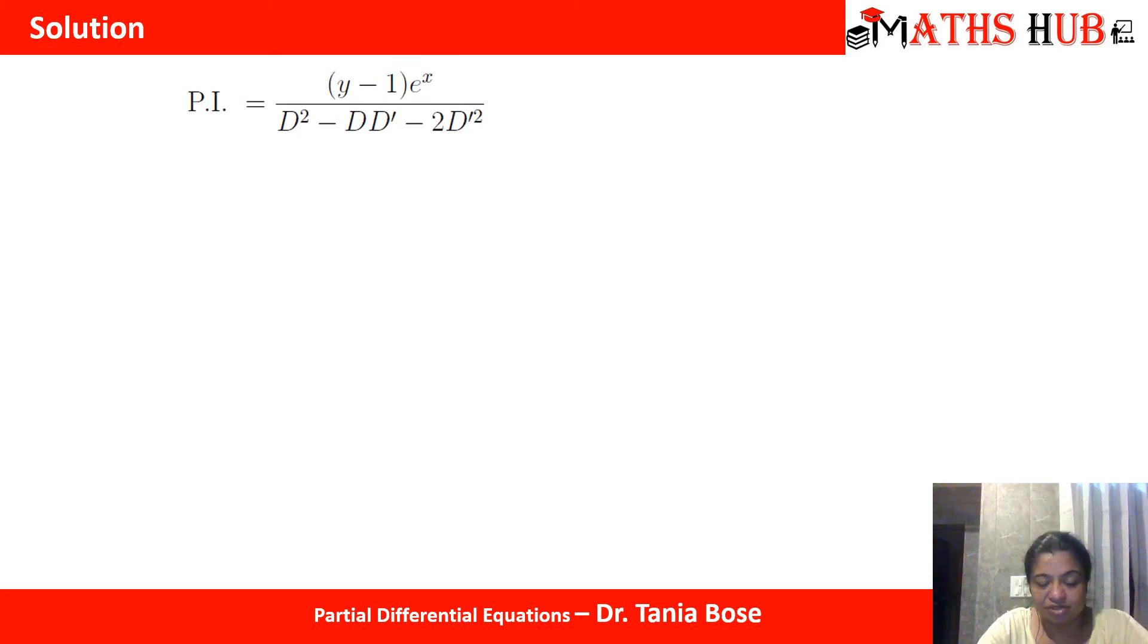Now let's come to the particular solution. We have PI as (y minus 1) e to the power x upon d square minus d d dash minus 2 d dash square. You can see that it is an exponential multiplied with the function of y. According to the rule we will replace d with d plus 1 and d dash will remain the same because there is no term of y present here.